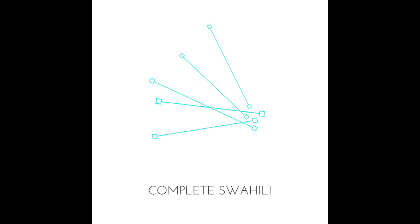And si also works for everybody. So 'we are not'? Si, or si si si. 'You are not'? Si, or we we si. 'He is not'? Ye ye si. Or just si if we have the context. So this si works for everybody, like ni. So in the present 'to be', we have ni and si for the negative, for everybody.